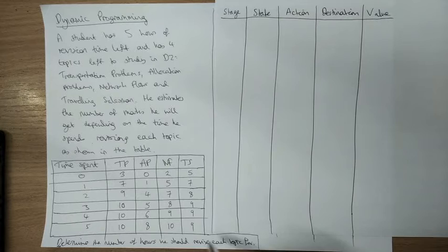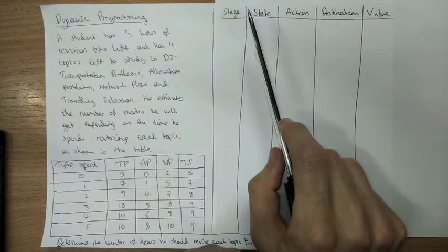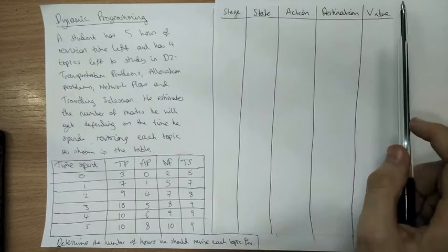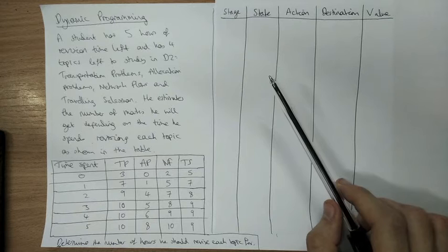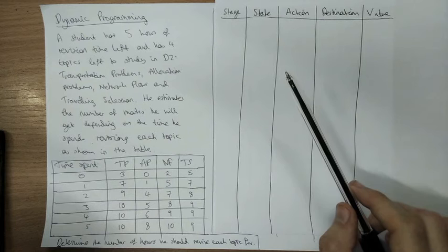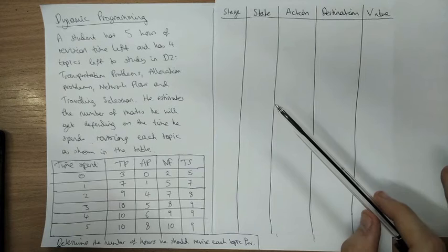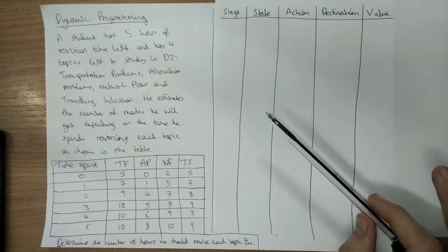The question asks us to determine the number of hours you should spend revising each topic in order to maximise the number of marks he gets in the actual exam. When looking at a dynamic programming problem, the hard thing is working out what the different stages, states, actions, and destinations are. You've got to interpret them for the question you're currently doing. So let's take a minute and think: what's the question actually asked us to do? What would any solution look like?